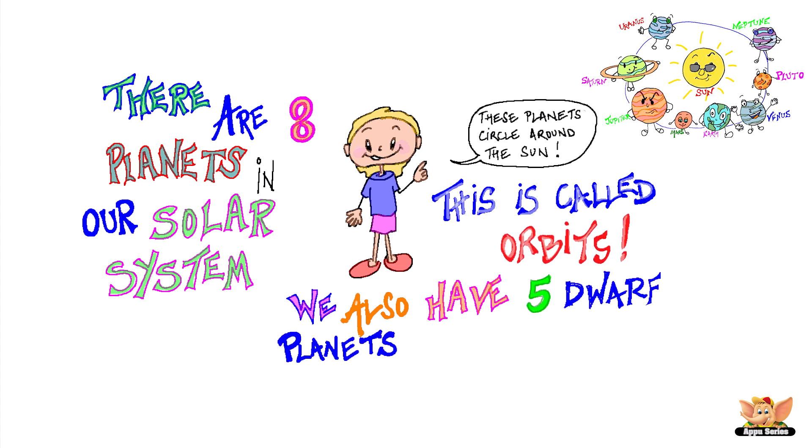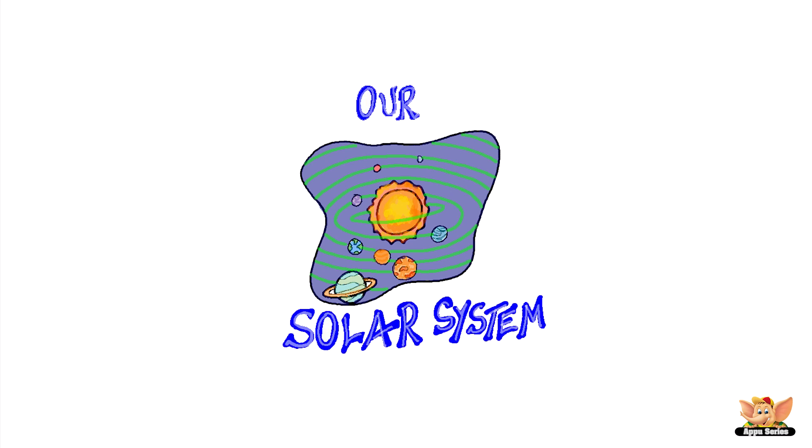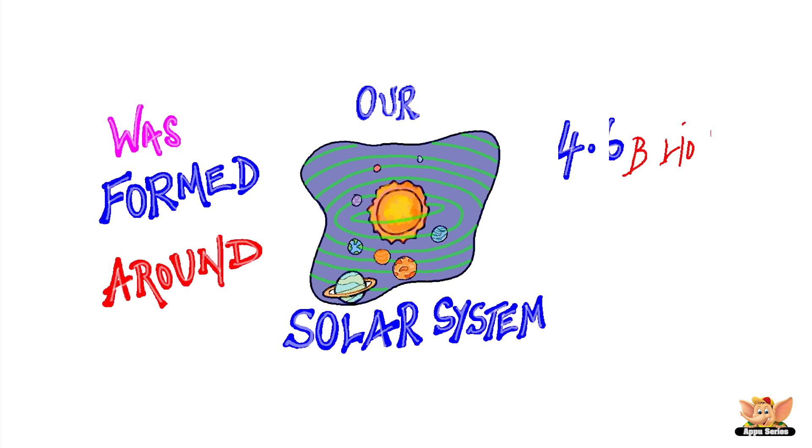We also have five dwarf planets in the solar system. Our solar system was formed around 4.6 billion years ago.